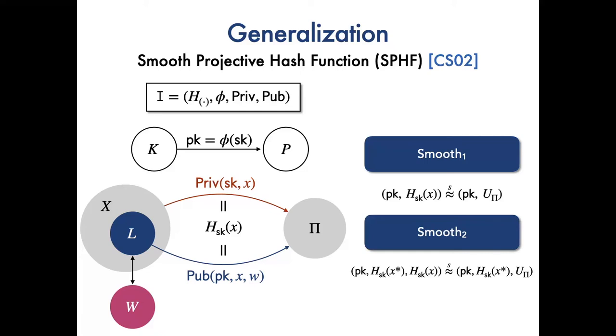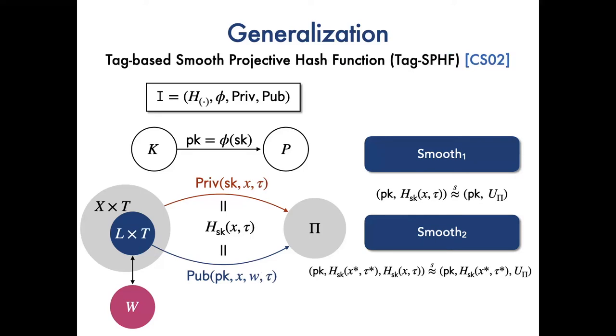Some SPHFs satisfy stronger smoothness, smooth two. That is to say, conditioned on fixed PK and the hash value of any non-language element X star, for any other non-language element X, its hash value is statistically indistinguishable from the uniform distribution over the space Pi. The notion of SPHF could be generalized to tag SPHF, where a tag tau is also taken as an auxiliary input by hash function H, algorithms PRIV and PUB.